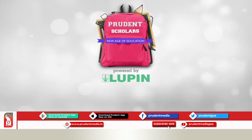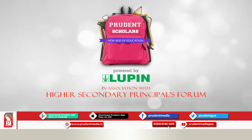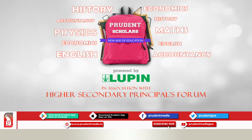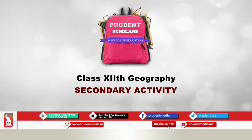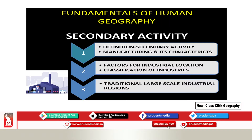Prudent Scholars powered by Lupin Pharmaceuticals in association with Higher Secondary Principles Forum. Hello everyone, this is Vinita Pawar and today we are going to discuss about Secondary Activities. In this lesson, we will be first studying about what are secondary activities, manufacturing and its characteristic features. We will be discussing about factors for location of industries, classification of industries, traditional large scale industrial regions, etc.